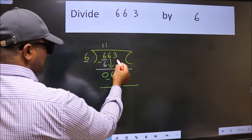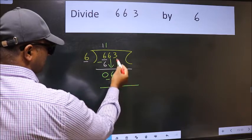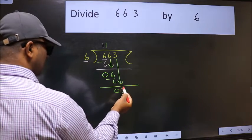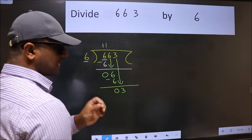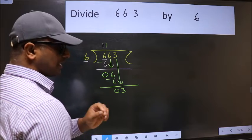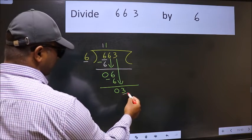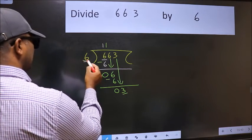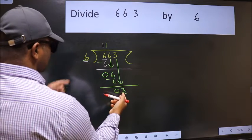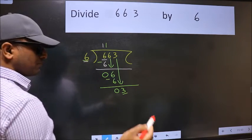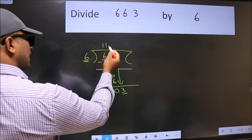So 3 down. After this step, the mistake happens, and the mistake is this: here we have 3 and here 6. 3 is smaller than 6, so what many do is they directly put dot, take zero, which is wrong.